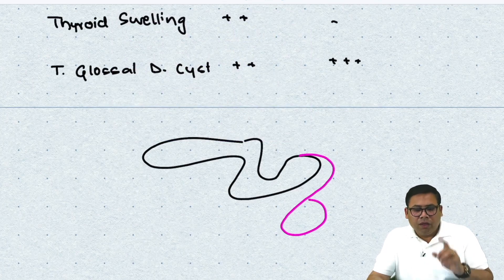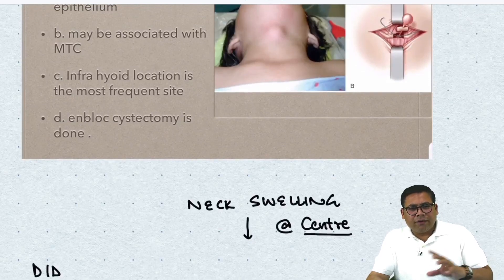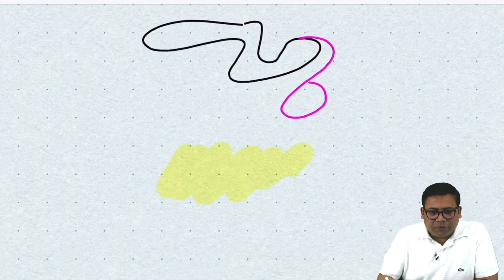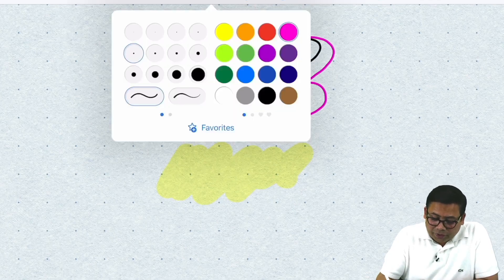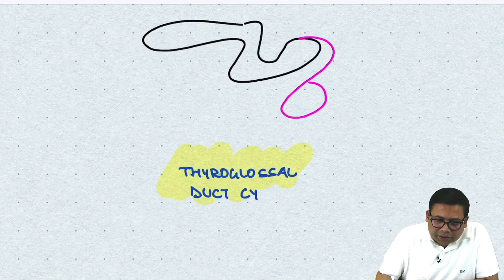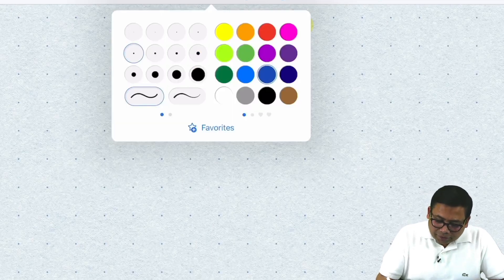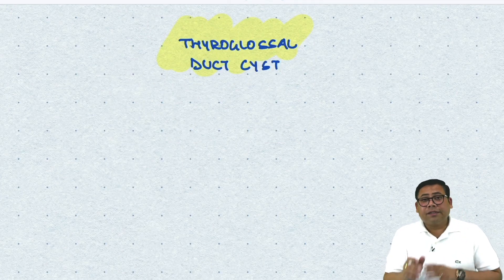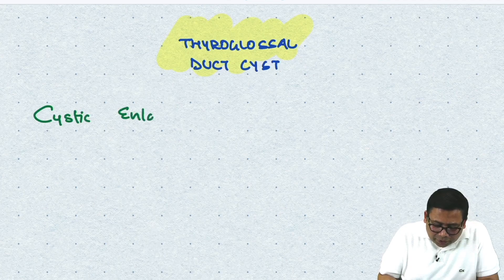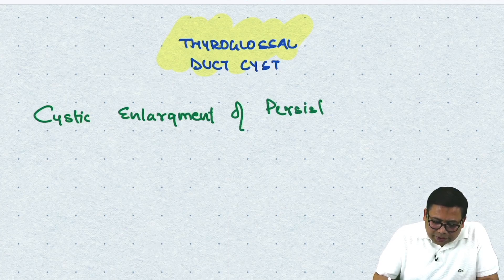So one thing is clear: we have a thyroglossal duct cyst. Now let us discuss the concept of thyroglossal duct cyst on which today's case scenario is based. In layman's language, it is a cystic enlargement of a persistent thyroglossal duct.